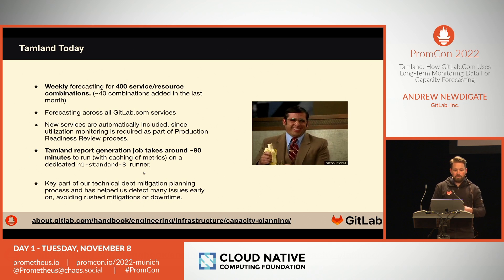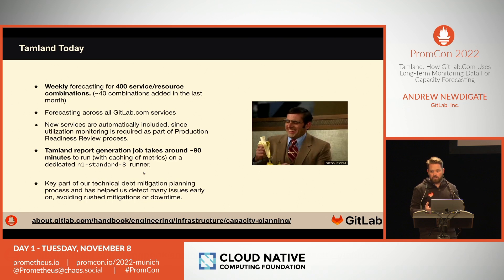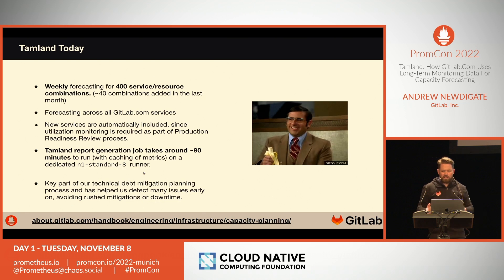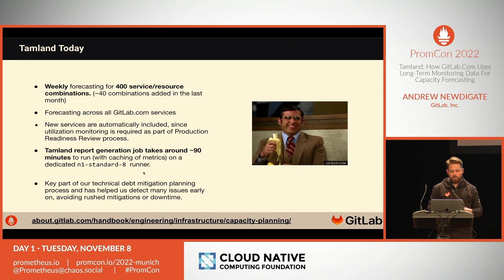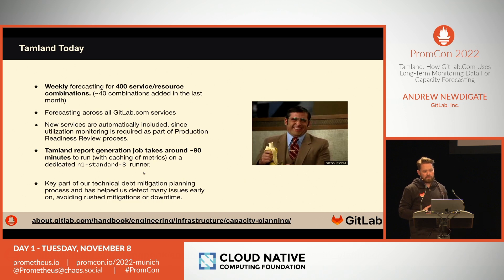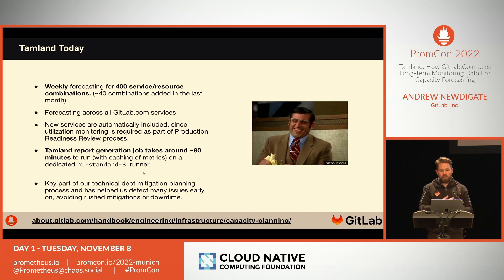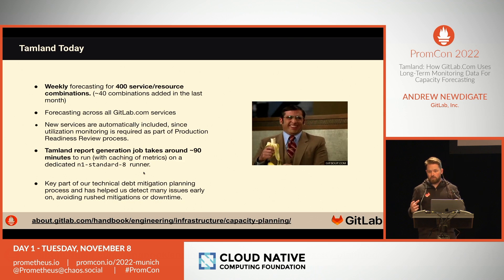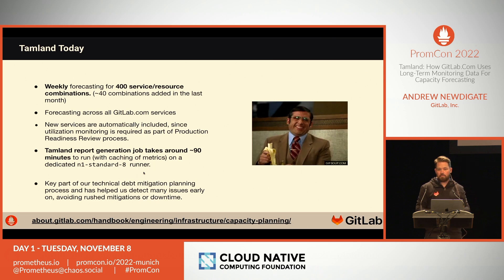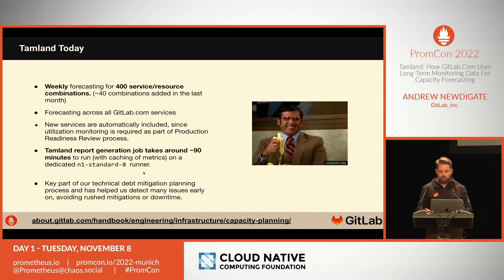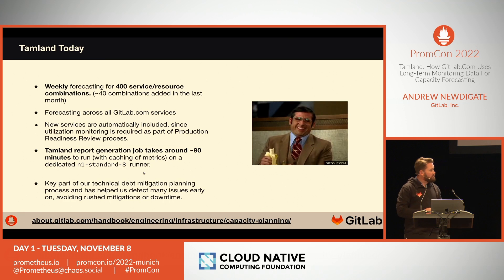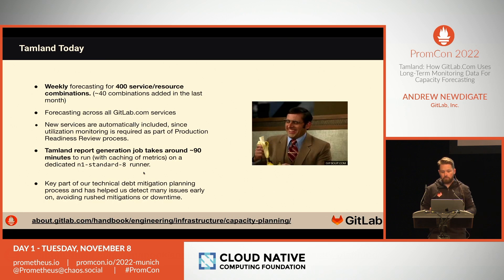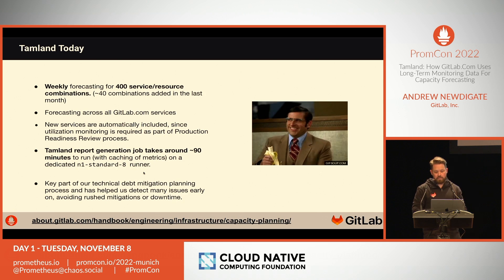Here are some figures from our current deployment of Tamland. We monitor about 400 different service-resource combinations, and this is growing — in the last month we've added about 40 new combinations. As a prerequisite for all production deployments, our production readiness process requires short-term monitoring be in place before a service gets rolled into production. Because Tamland relies on the same recording rules used for short-term utilization metrics, all new services are automatically included in the Tamland report. The report runs for about 90 minutes on a dedicated n1-standard-8 runner, relying on a great deal of caching to speed up historical data fetching from Thanos. Tamland has become a key input into our weekly engineering planning process, so any critical issues we spot can get prioritized very quickly.